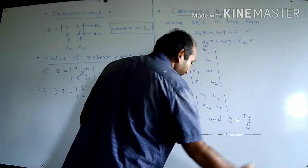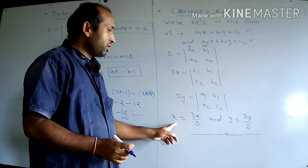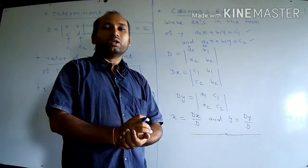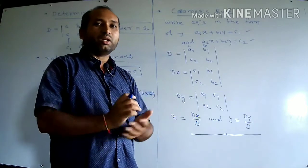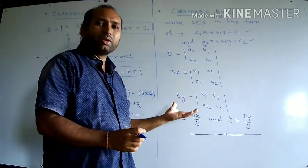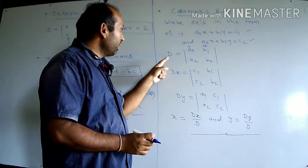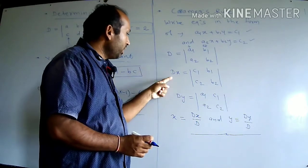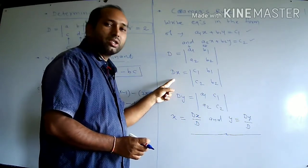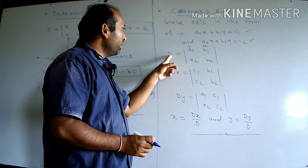Using this formula we can find the values of X and Y — that means we can find the solution of the given simultaneous equation. It is a very simple method. Remember these three determinants: D, DX, and DY.